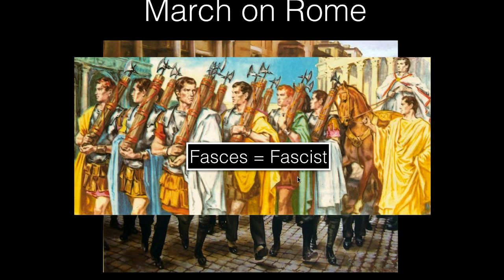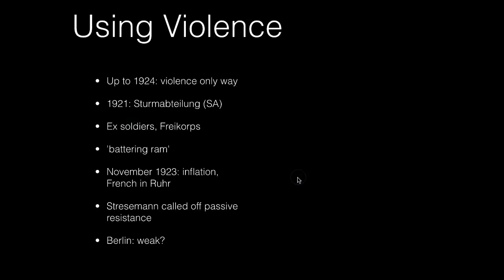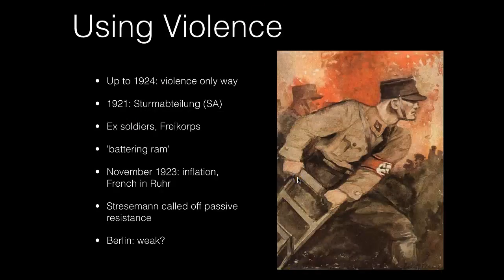Mussolini's March on Rome in 1922 was a success, which made Hitler think he might also have a chance. Up to 1924, violence was their policy for gaining power. In 1921, the SA, the Sturmabteilung, had been formed - the violent thugs of the Nazi party. Many were ex-soldiers and members of the Freikorps, the battering ram of the Nazi party, taking on political opponents such as the communists, the KPD, in street battles.